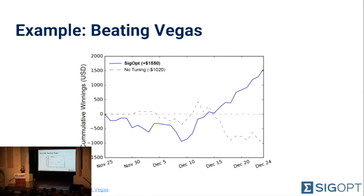In this example, we managed to beat the house. Using hyperparameter optimization was the difference between making money and losing money. For you, using hyperparameter optimization can be the difference between the success or failure of your model.